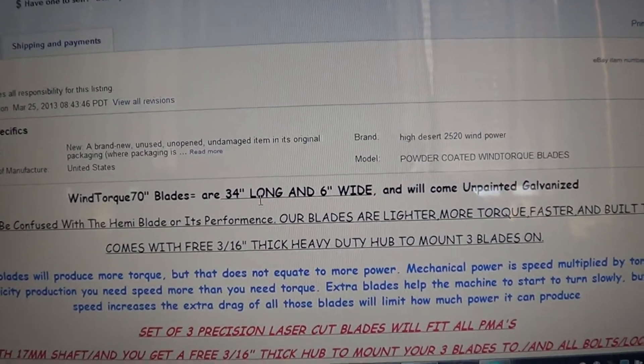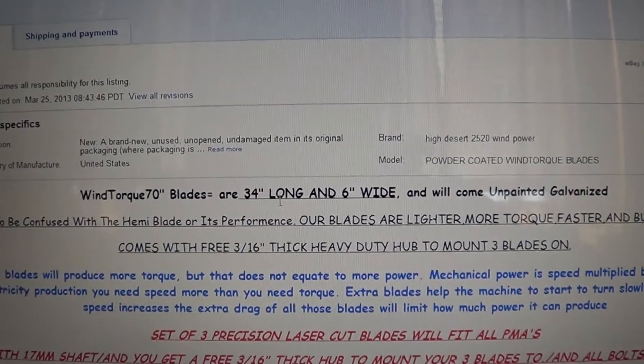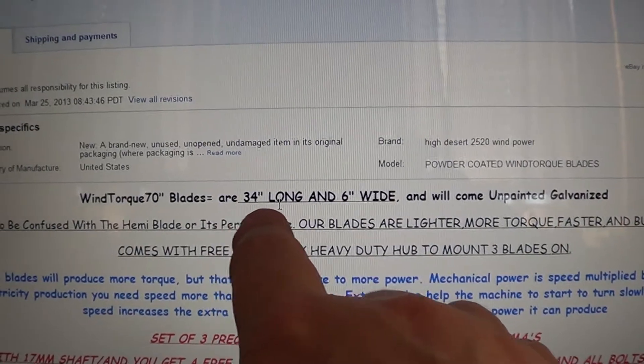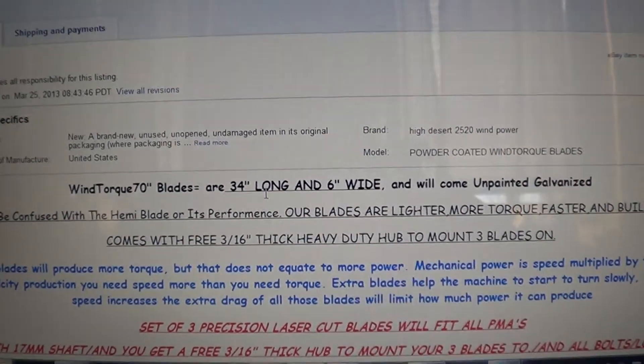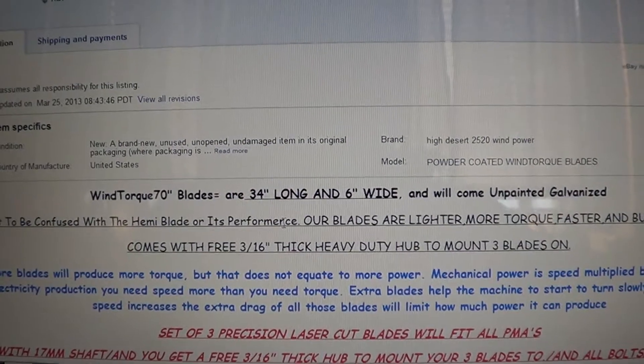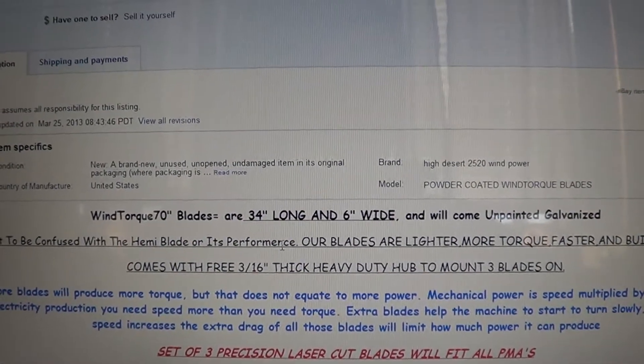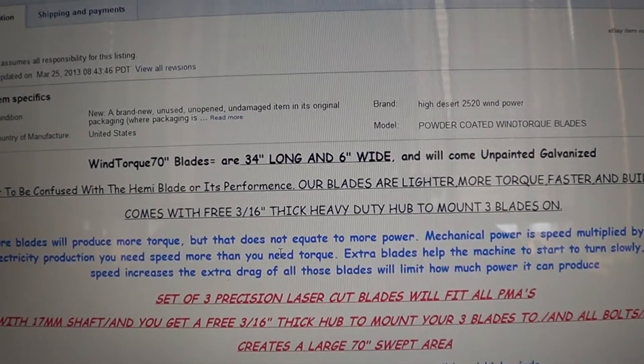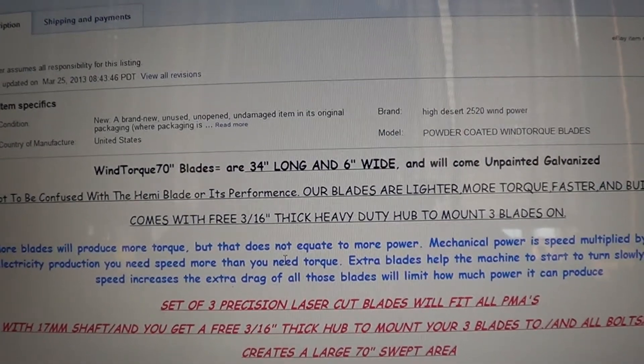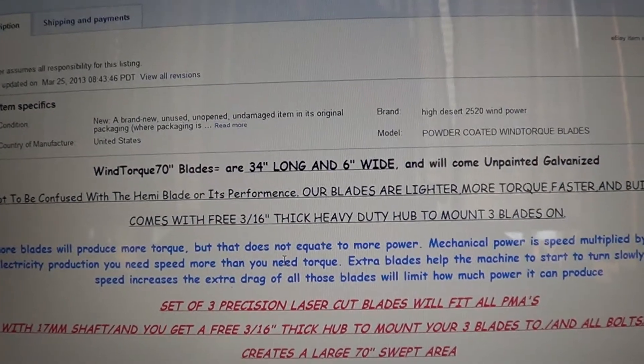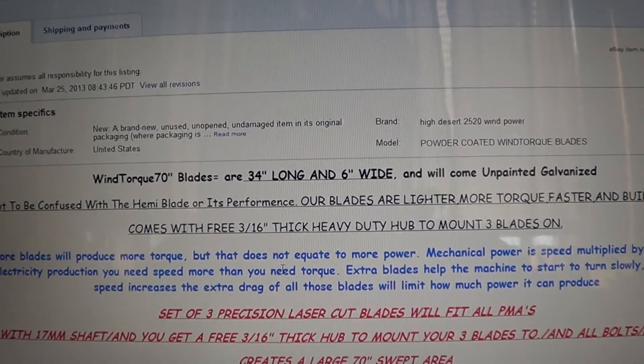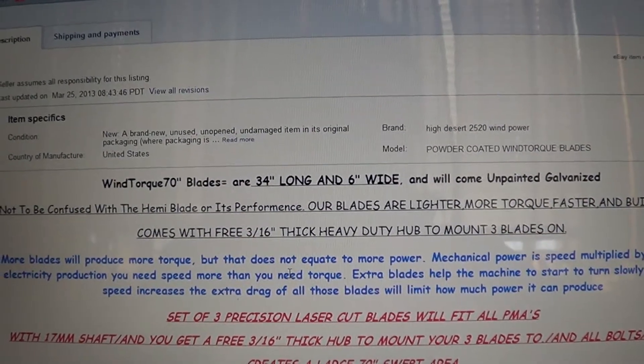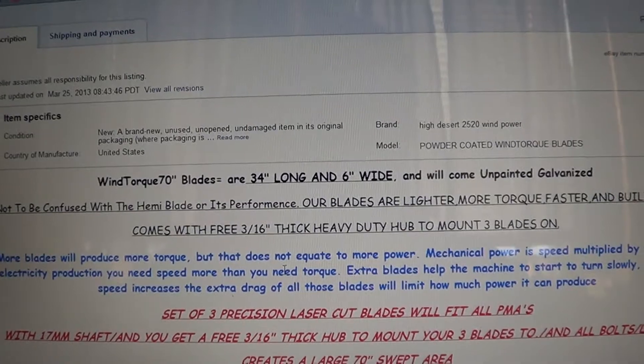Still, $100 bill. Big, you know, big difference than paying out $200 for 11 blades or whatever they're charging, you know? Okay? And then we got the, you got the same sweep area, 70 inches, 34 inches in length, 6 inches wide, galvanized. You can paint these, but you want to make sure when you paint them you do several thin coats.